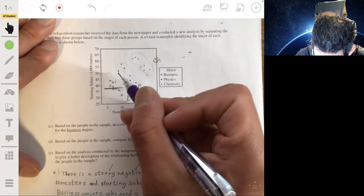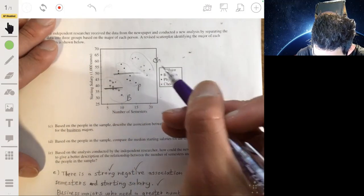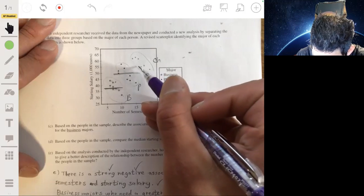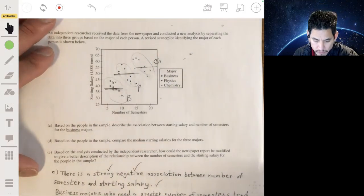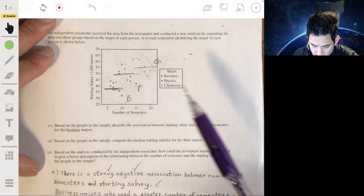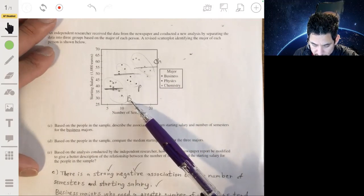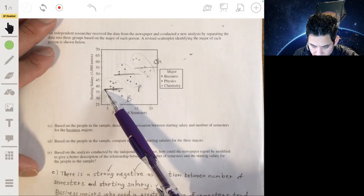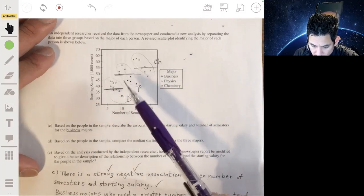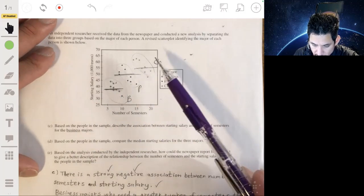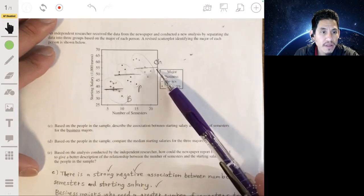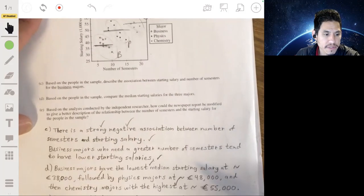And the median here for chem. So it seems like the business majors have the lowest median starting salary at about 38,000 euros. Then physics majors come in second. And chem majors are the highest at 55,000 euros.